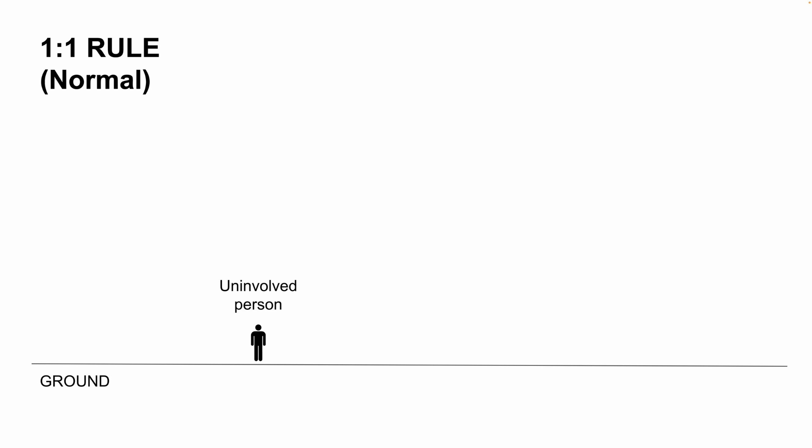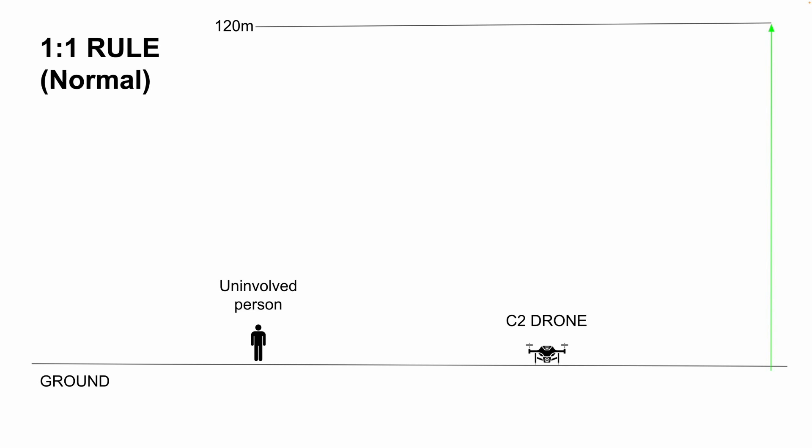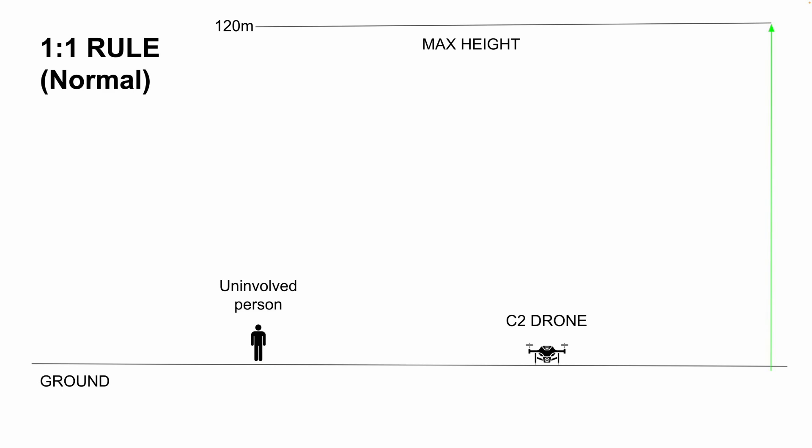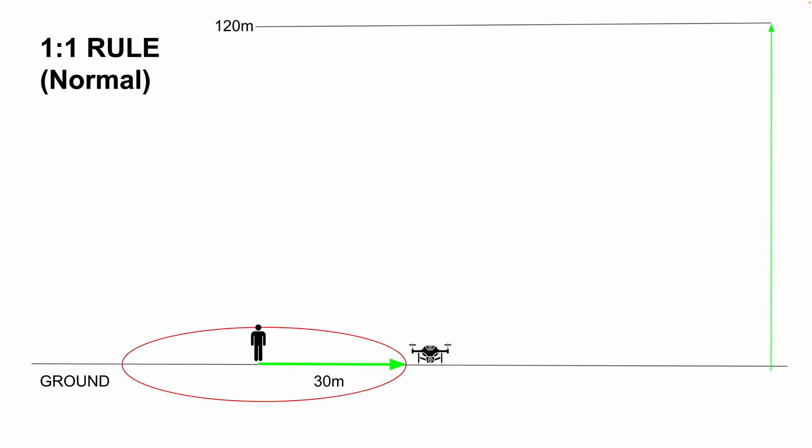To keep everything super simple: the drone is in normal mode, we have flat ground, and on the ground we have placed a person that is not directly involved in the drone operation — meaning he's an uninvolved person. Next, we need a drone, and in this case it's a C2 classified drone, which means it needs to fly in the A2 airspace. We have a 120 meter limit, which is the maximum height we are allowed to fly. With that information, we know we need to establish a safety zone of 30 meters around an uninvolved person.